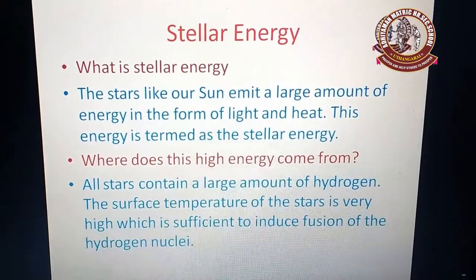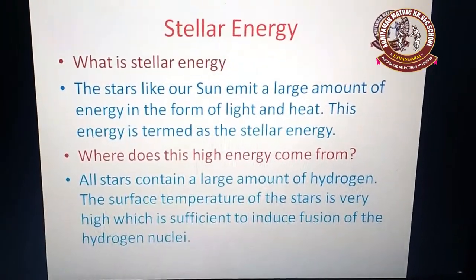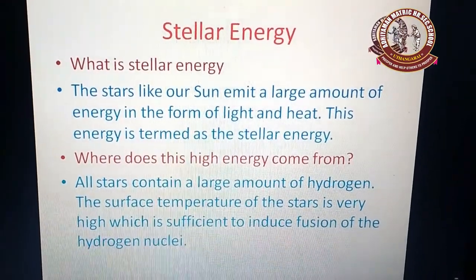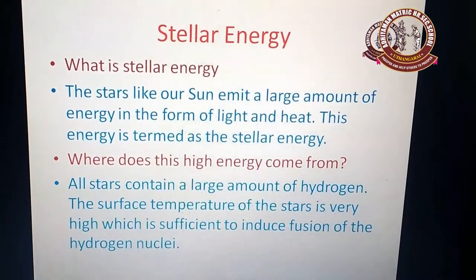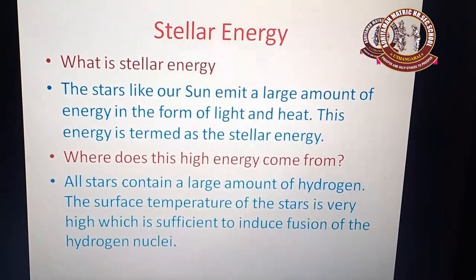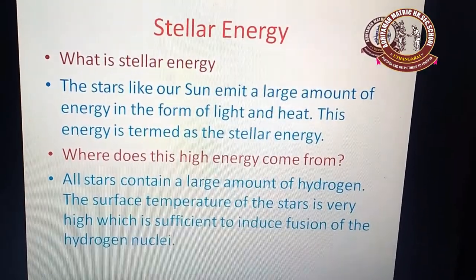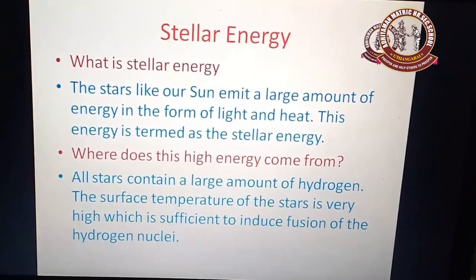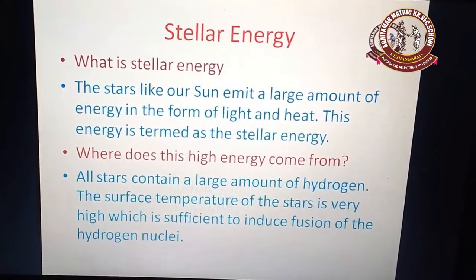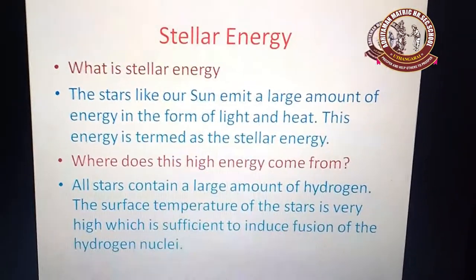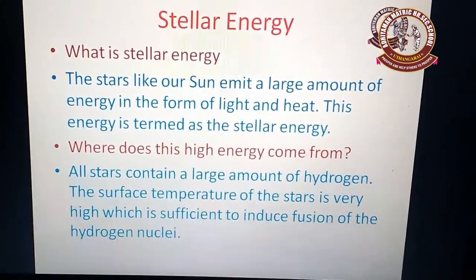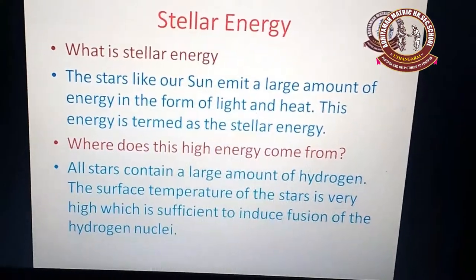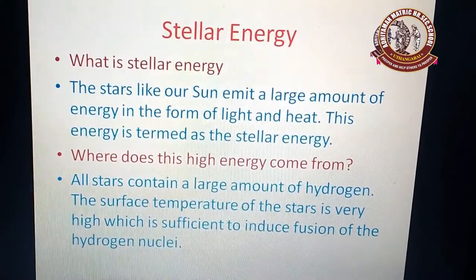Where does the energy come from? Nuclear fusion reaction takes place here also. For nuclear fusion reaction, we must have lighter group elements — here that lighter element is taken as the hydrogen nucleus. Stars contain a large amount of hydrogen. The surface temperature of the star is also very high, which is sufficient to induce the fusion of the hydrogen nucleus. Nuclear fusion reaction takes place only at extremely high temperatures, and that high temperature is present in stellar surfaces.